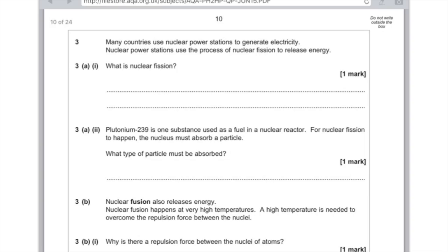Question 3, many countries use nuclear power stations to generate electricity. Nuclear power stations use the process of nuclear fission to release energy. Part A, what is nuclear fission and simply put, you need to say that it is the splitting of an atomic nucleus, make sure you mention the word nucleus. If you say atom you won't get the mark. Part T, plutonium 239 is one substance used as a fuel in a nuclear reactor. For nuclear fission to happen the nucleus must absorb a particle. What type of particle must be absorbed? If you can imagine that diagram of the chain reaction, remember that it's a neutron that gets released and then they ping off and go and hit more nuclei and then the chain reaction is set up, so the answer here is a neutron.